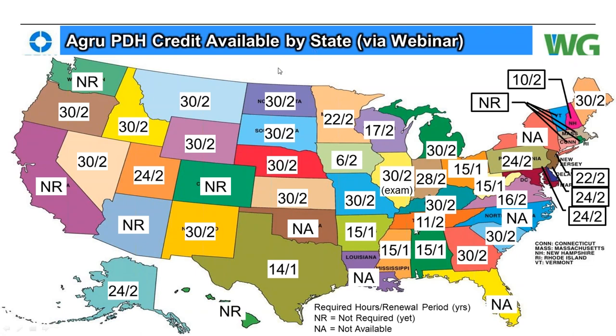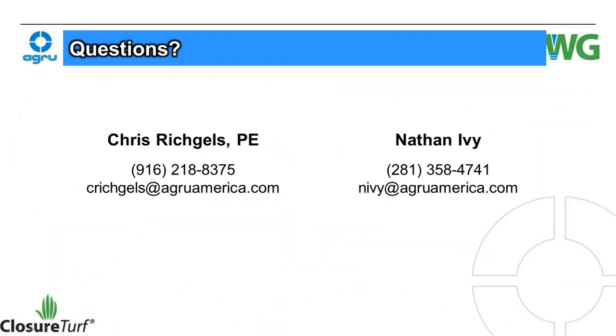The next webinar will cover active gas extraction systems using various components available for use with Closure Turf, with Delaney Lewis of Watershed Geosynthetics — who has spent his entire career around landfills and is one of the most knowledgeable people in this area. PDH credit is available in Washington, California, Arizona, and Hawaii, though some eastern states are not eligible due to accreditation rules. Contact the presenter or Nathan Ivey for PDH setup. Thanks for attending and see you next time — active gas extraction with the Closure Turf system.